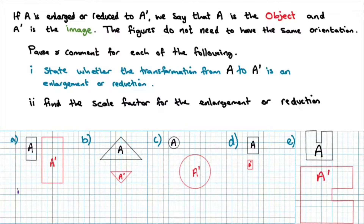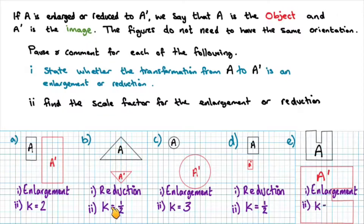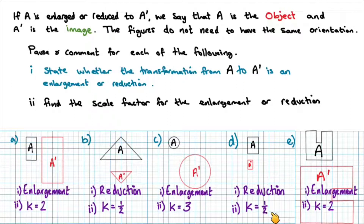If you attempted those in your book, you should have the following answers. For question A, it's an enlargement by scale factor of two. For B, it's a reduction by scale factor of one half. For C, you have an enlargement by scale factor of three. For D, you have a reduction by scale factor of one half. And the final one, you have an enlargement by scale factor of two. Remember, the orientation doesn't have to be the same.